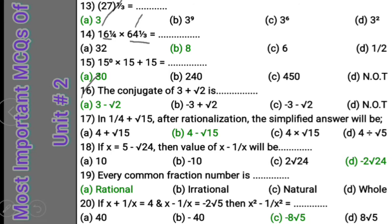Question 16: The conjugate of 3 plus square root 2 is what? To find the conjugate of any expression, the symbol between the two terms is changed. So the conjugate of 3 plus square root 2 is 3 minus square root 2, and vice versa — these two are conjugates of each other.